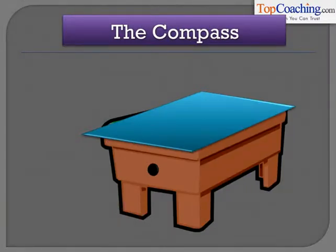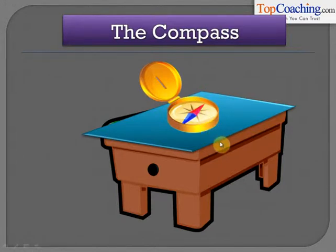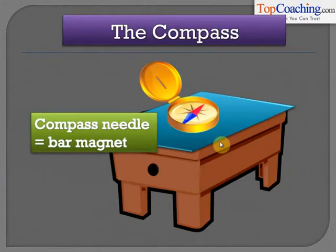Another simple term we need to learn about is the compass. A magnetic compass is simply a bar magnet placed in a circular environment. The shape of the bar magnet has been modified as shown in the figure. The red end is the north pole and the blue end is the south pole. The purpose of a compass needle is to tell us the direction of the north pole and the south pole. We will be using a compass often in our discussion related to magnetism.